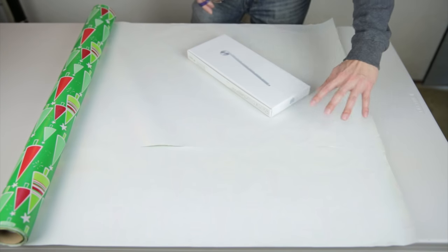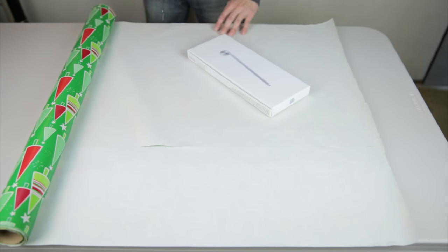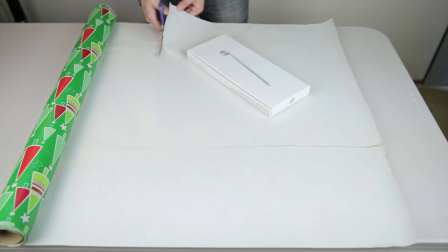You see the general size of this triangle here. Make about the same triangle over here. So just cut ballpark area over here, and this is the size of your paper that you need.